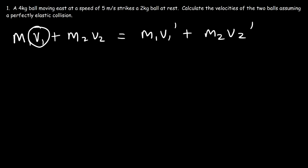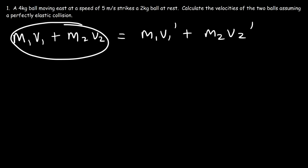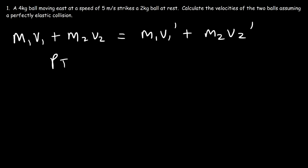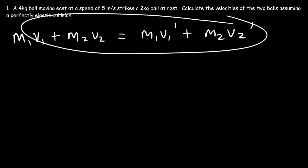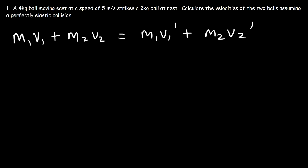v1 is the initial velocity of the first ball. v1' is the final velocity of the first ball. v2 is the initial velocity of the second ball, and v2' is the final velocity of the second ball. This equation states that the total momentum before the collision is equal to the total momentum after the collision. If you have just one missing variable, this equation will be enough. But in this problem, we have two missing variables, so we need a second equation.